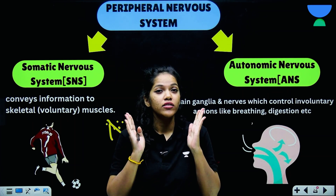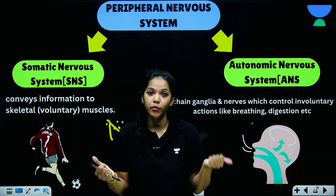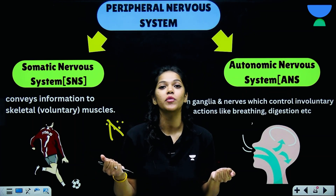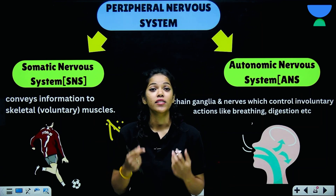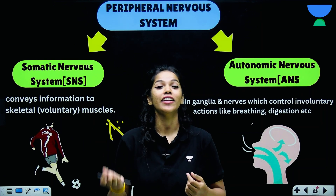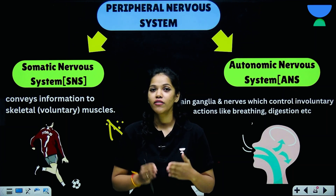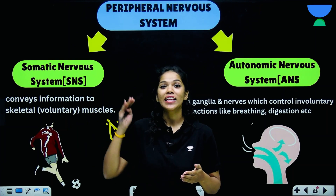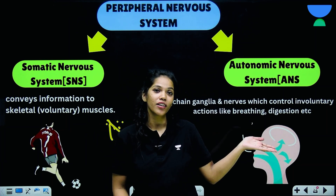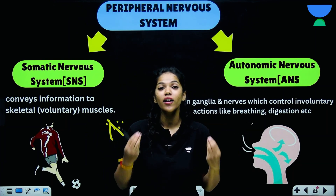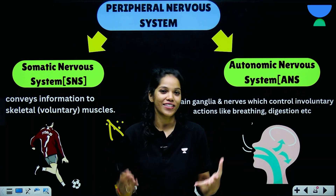To recap: your nervous system is divided into the central nervous system and the peripheral nervous system. The central nervous system comprises your brain and spinal cord, and the peripheral nervous system consists of all the nerves connected to them. The peripheral nervous system is further divided into the somatic nervous system, responsible for all voluntary actions, and the autonomic nervous system, responsible for all involuntary actions like breathing and digestion.